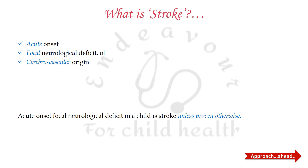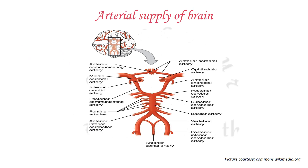Any acute onset focal neurological deficit in a child should be considered as stroke unless and until proven otherwise. This is a complex diagram of the arterial supply of the brain. What we must remember is the circle of Willis — the anterior circulation is by the internal carotid artery and the posterior circulation is by the vertebrobasilar artery systems.